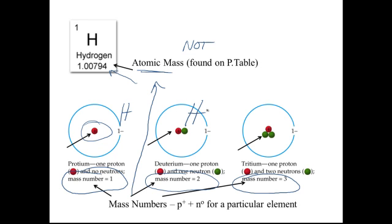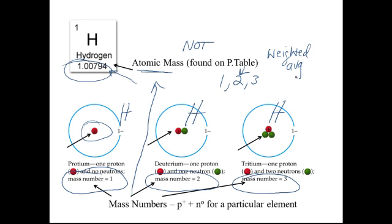This decimal number for hydrogen is the average of all these isotopes. You might think that averaging one, two, and three gives you two — right in the middle — and that's how you were taught to do averages. But what you haven't been taught yet is a weighted average. What if you have a whole bunch of ones and very few twos and threes? Then the average has to shift closer to the most abundant one. That's how you get the atomic mass, which is different from the mass numbers.